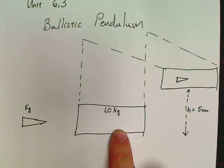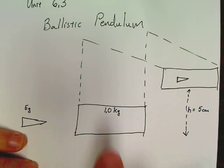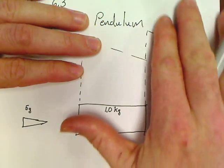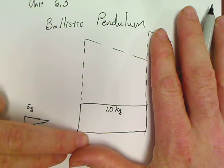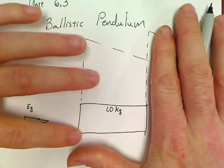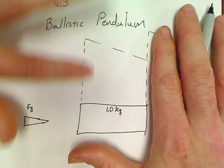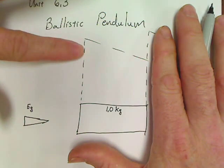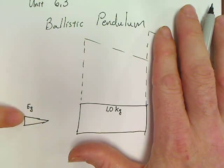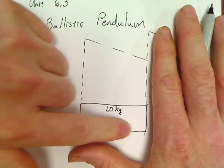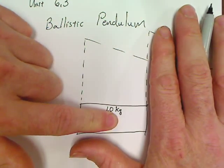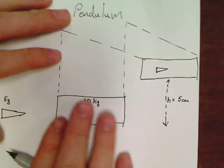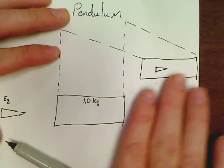A ballistic pendulum is an example of an inelastic collision. We've got a block, and let's kind of ignore this, but there's a bullet and it's been fired at this block of wood, and this block of wood is a pendulum. It's attached by strings or rope or something, and what's going to happen is this bullet's going to hit the block of wood, the block of wood's going to catch the bullet, and when it does, the block of wood is then going to swing up into the air.